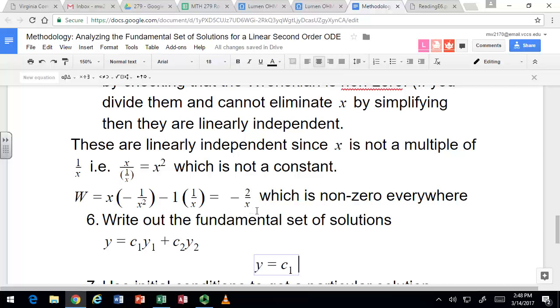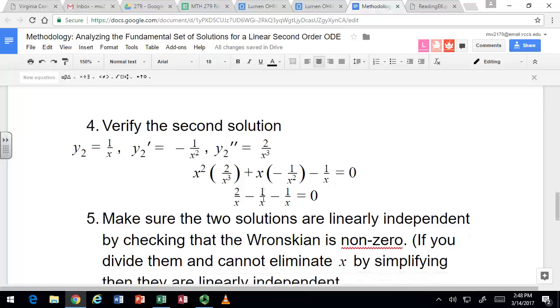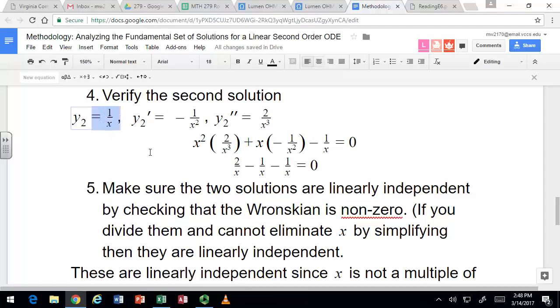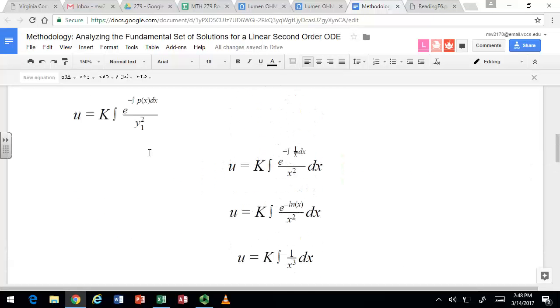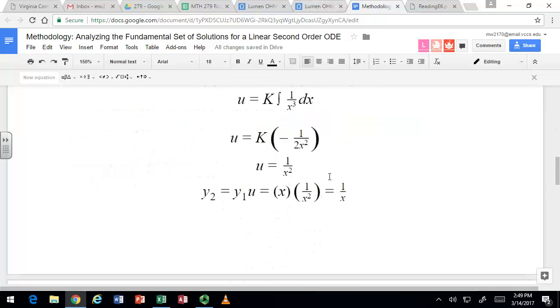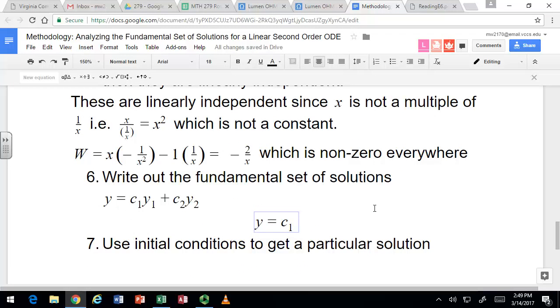So there is an issue with the Wronskian at x = 0. But think about our second solution isn't valid at x = 0 anyway. Our second solution is 1/x, so that's obviously not defined when x is 0. So we probably wouldn't have an interval of validity that contains 0. You could go back to the original thing, because what if x is 0? If x is 0, then this just says y = 0. So then it only has the trivial solution. So kind of right from the beginning you're ignoring x being 0, and you look at 0 to infinity or some subset of that.